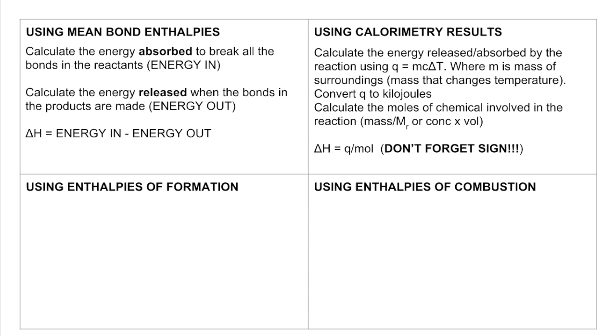Using enthalpies of formation now. So you need to look closely at the question, the data supplied in the question. If you're given data which is enthalpy change of formation, we can use this equation to calculate the enthalpy change for the reaction. So that's the sum of the enthalpies of formation of the products minus the sum of the enthalpies of formation of the reactants.